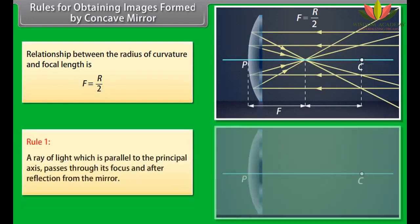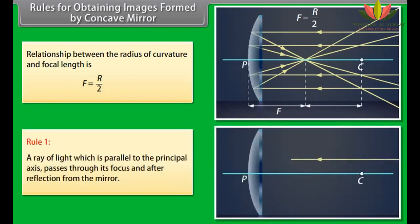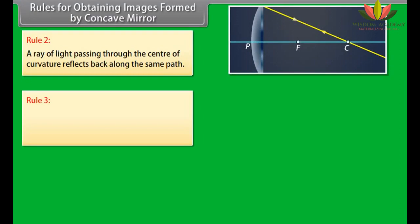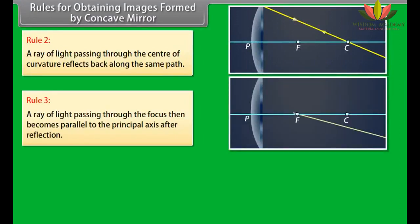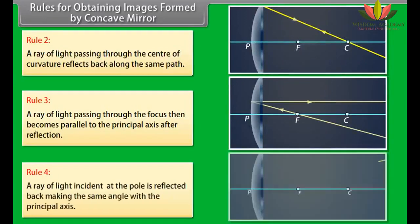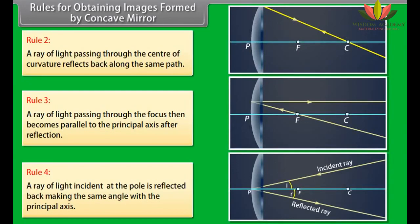Rule 1: A ray of light parallel to the principal axis passes through the focus after reflection from the mirror. Rule 2: A ray of light passing through the center of curvature reflects back along the same path. Rule 3: A ray of light passing through the focus then becomes parallel to the principal axis after reflection. Rule 4: A ray of light incident at the pole is reflected back making the same angle with the principal axis.